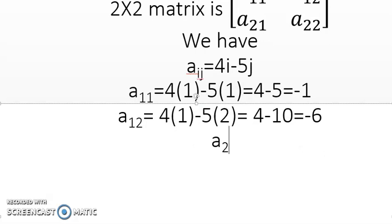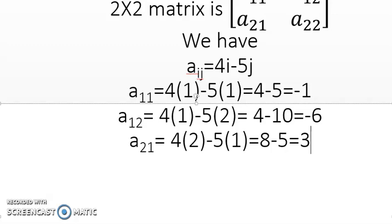Now A_21. Here i is 2 and j is 1. So now 4 times 2 that is 8 and 5 times 1 that is 5, so 8 minus 5 is 3.